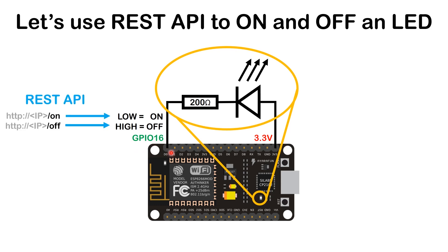Once you have that coded in, the next thing you want to do is use the REST API. In the REST API, as long as you access the 'on' or 'off' endpoint, it goes and turns this pin on and off. This is very simple. That's all on the software side that you have to do on the ESP8266.